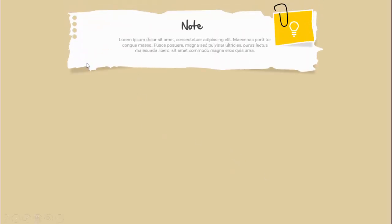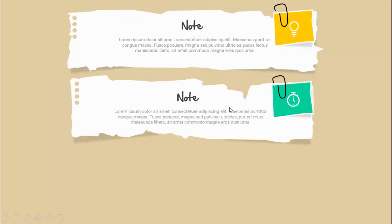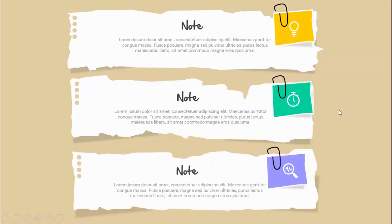In today's tutorial I'm going to show you how to create a three-point tone paper effect slide design in PowerPoint. When I click, you can see the first torn paper come in with a note and some detail text. I've put a small post-it note along with an icon, and there's a pin with a shadow effect. When I click again, the second one appears with a different color combination, and then the third one.